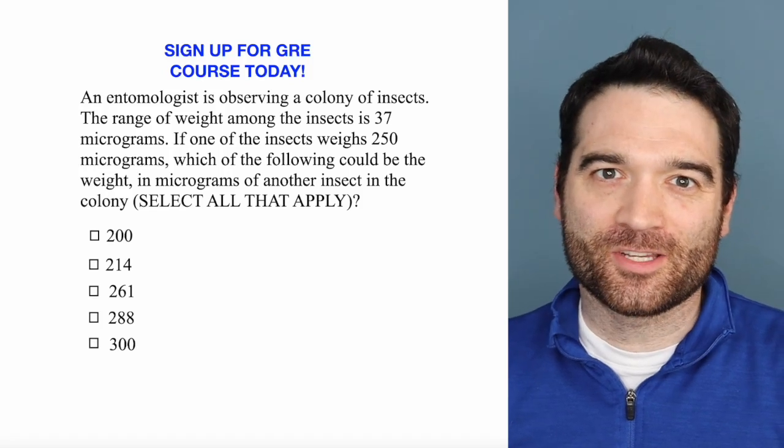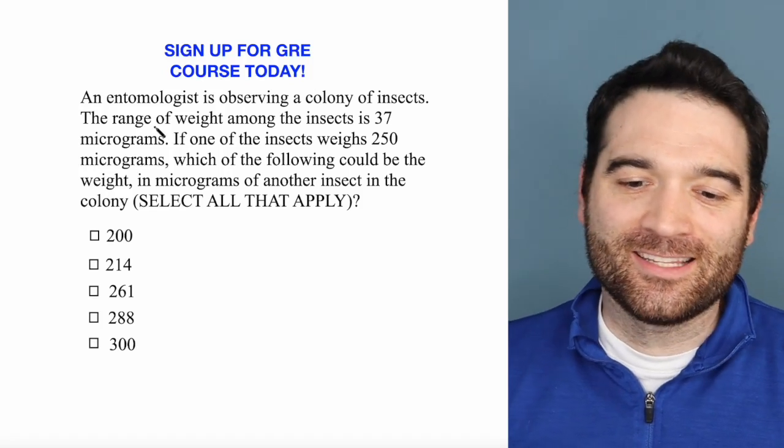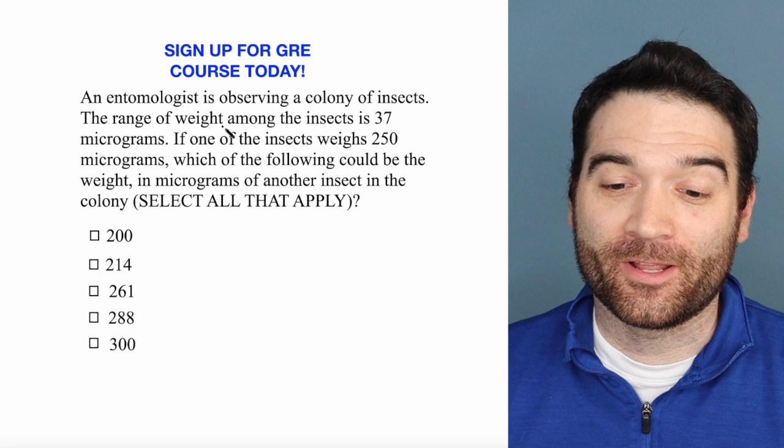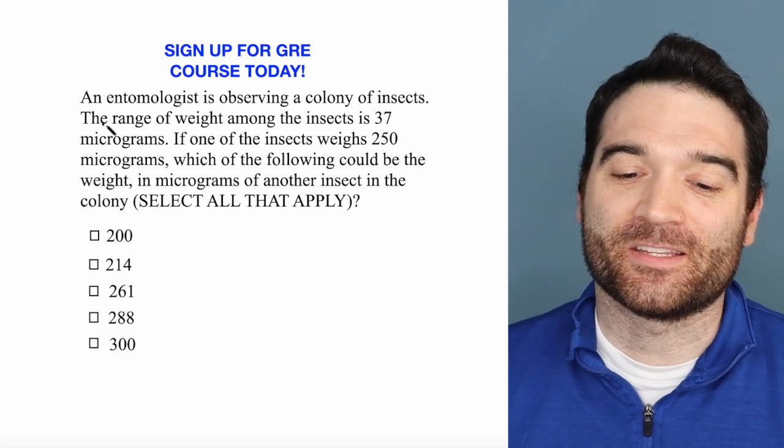Here's a GRE data analysis question. Let's take a look. An entomologist—there's a good GRE word—is observing a colony of insects.